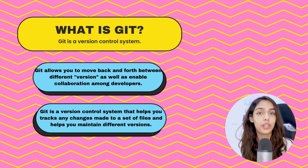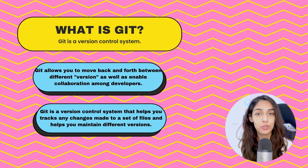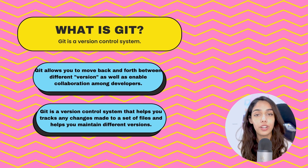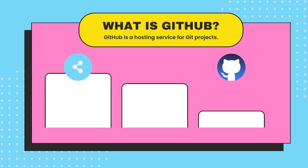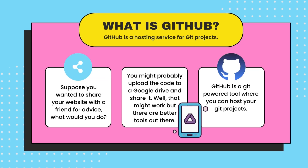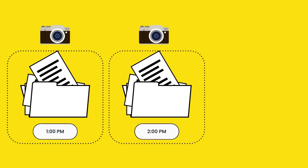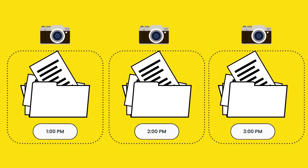Before we jump into getting our hands dirty with Git, let's do a quick overview of what Git is. Git helps you maintain and control different versions of your project. It also helps you collaborate with other developers, whereas GitHub is used as a hosting platform for sharing your Git software projects with other developers. Git tracks the changes made to a certain set of files, takes snapshots of these changes at certain intervals of time, and saves these as something known as a commit.